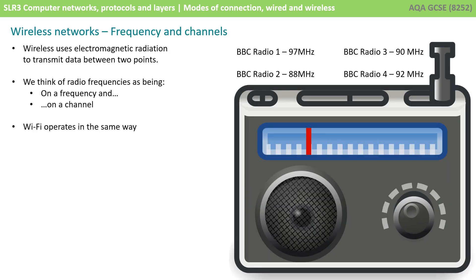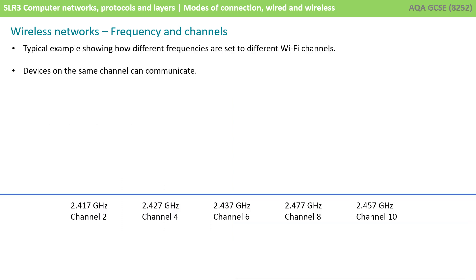Because wireless uses electromagnetic radiation to transfer signals between two points, signals have to be transferred on a number of frequencies, and each frequency is given a channel number for convenience. For example, BBC Radio 1 is at 97 MHz and BBC Radio 2 is at 88 MHz — we can think of radio channels as being on a frequency and also on a channel. The same is true for Wi-Fi networks. Different countries can operate different frequency bands; for example, 2.437 GHz corresponds to channel 6 on a Wi-Fi network.